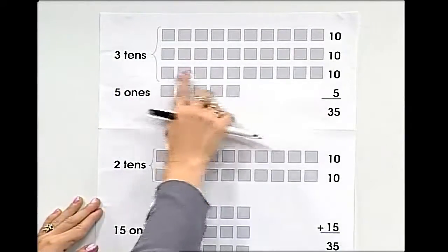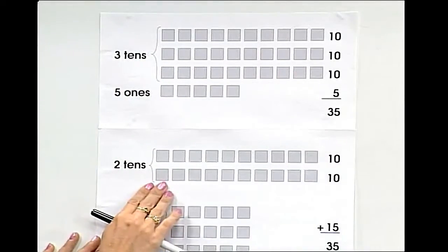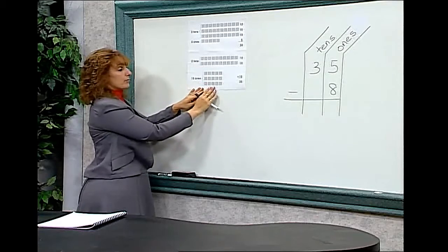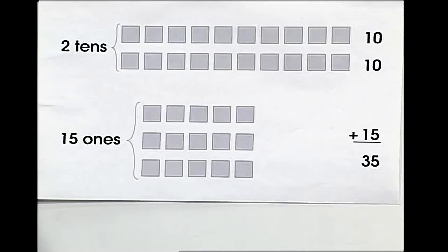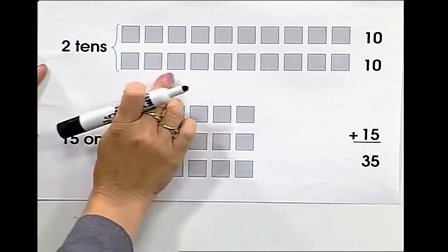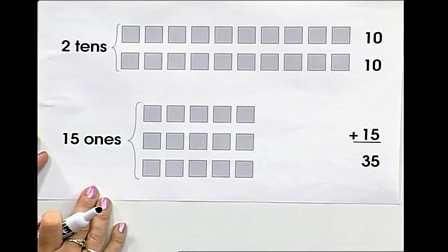We had three tens. We're now going to take one away, borrow it, put it down here with the ones, making it two tens by taking one of the tens and bringing it into the ones.